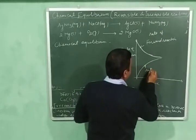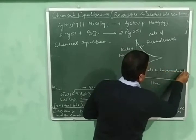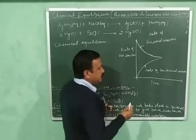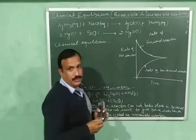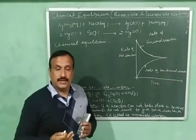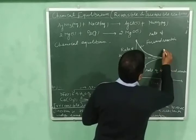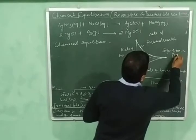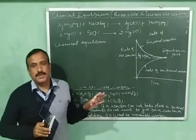This curve represents the rate of the backward reaction. The rate of the forward reaction is decreasing and the rate of the backward reaction is increasing. A stage will come when the rate of the forward reaction becomes equal to the rate of the backward reaction. The point at which the rate of the forward reaction becomes equal to the rate of the backward reaction is called the equilibrium point. At this point, the rate of the forward reaction equals the rate of the backward reaction. This is the diagrammatic representation of chemical equilibrium.